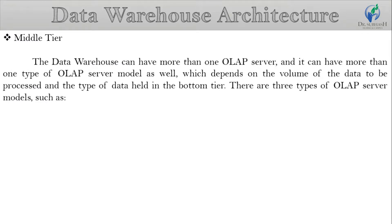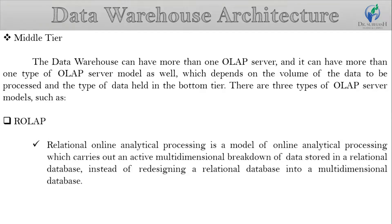The middle tier is the tier with the OLAP servers. A data warehouse can have more than one OLAP server and more than one type of OLAP server model, which depends on the volume of data to be processed and the type of data held in the bottom tier. There are three types of OLAP server models. The first is ROLAP, known as Relational Online Analytical Processing. This is a model of online analytical processing which carries out an active multi-dimensional breakdown of data stored in a relational database instead of redesigning it into a multi-dimensional database.